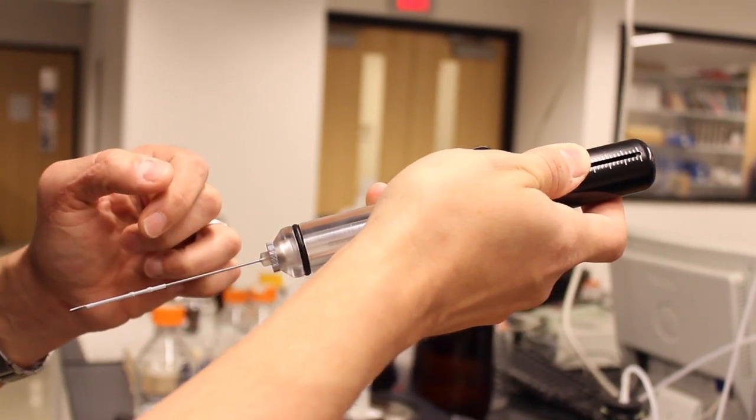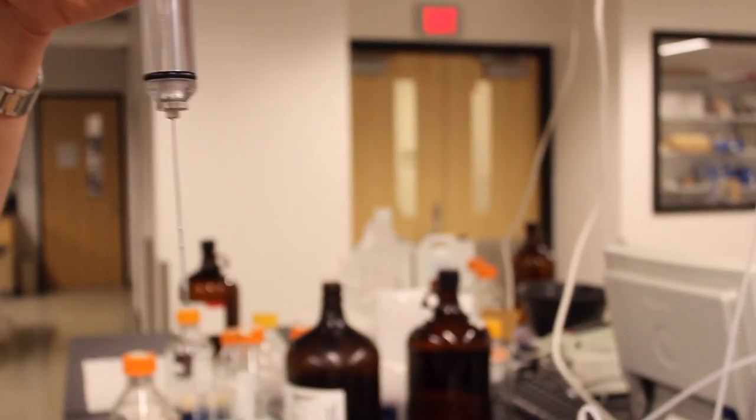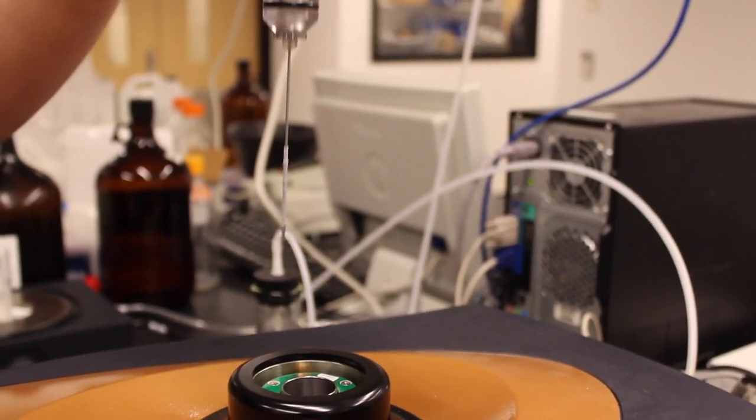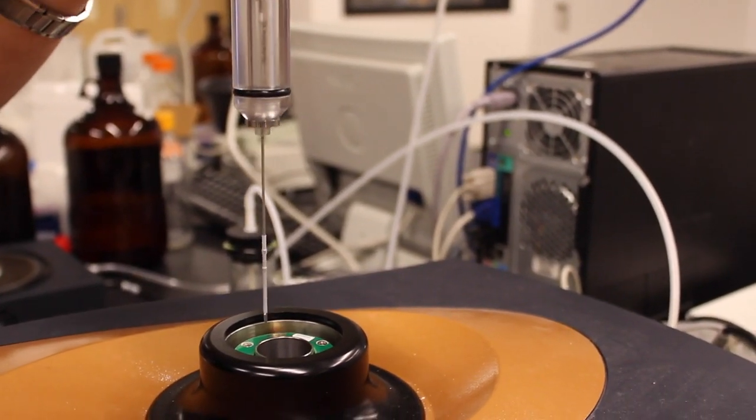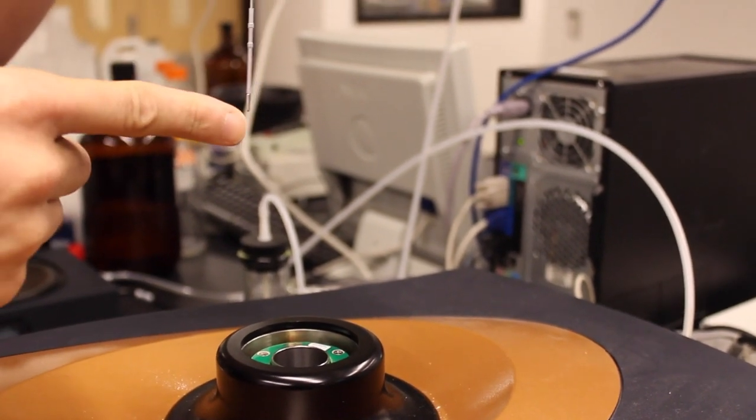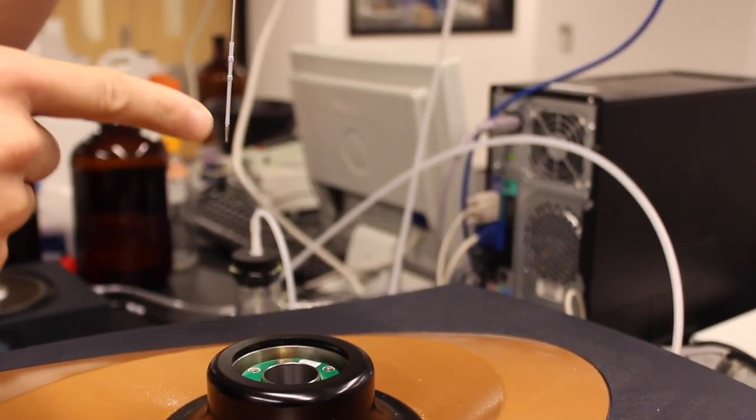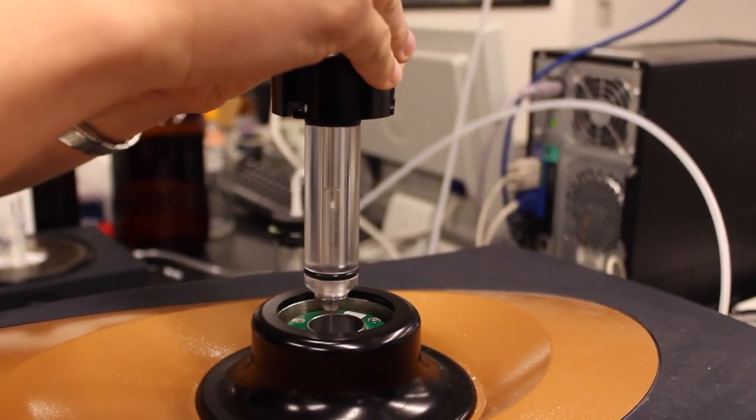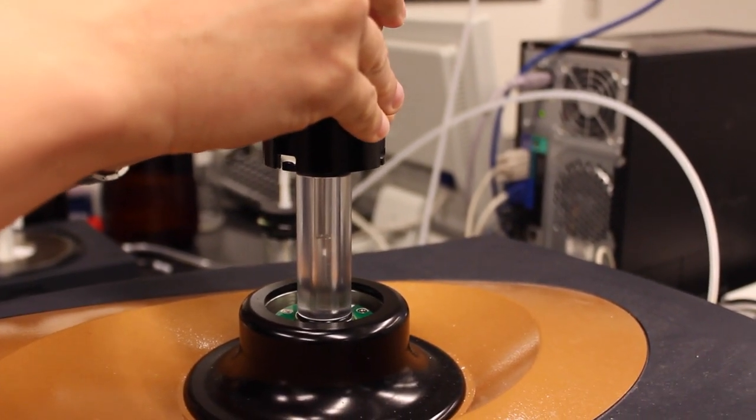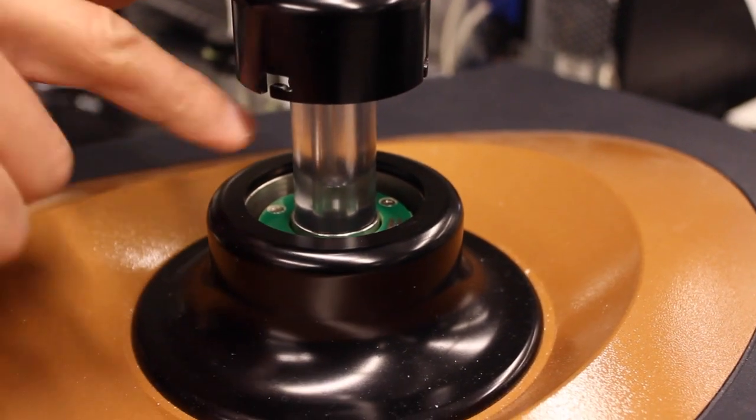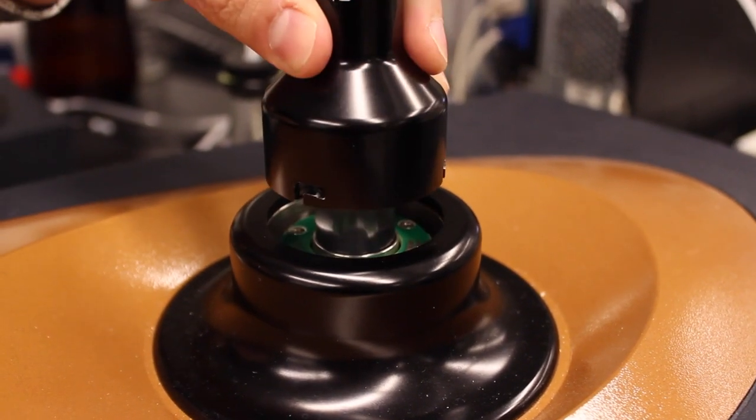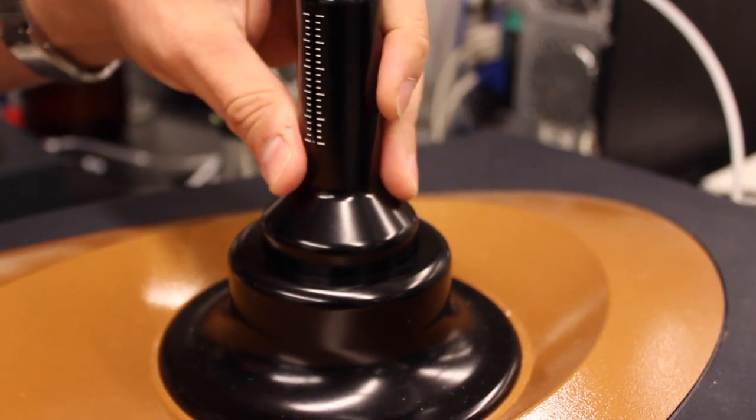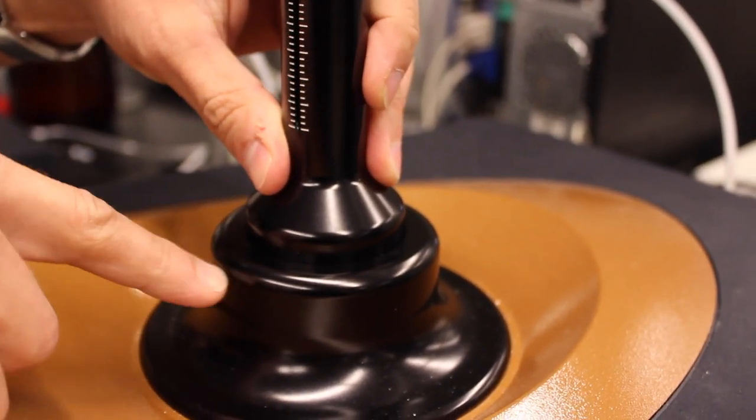Now we're going to install it back into the instrument so being careful to keep everything aligned vertically so that we don't damage or bend the needle. We're going to insert it into the housing here.